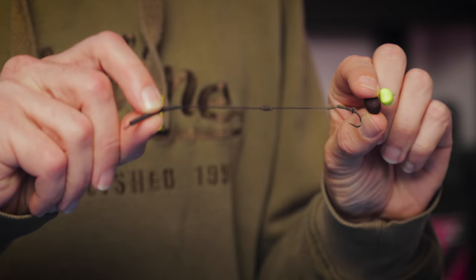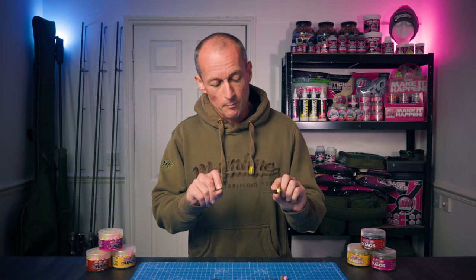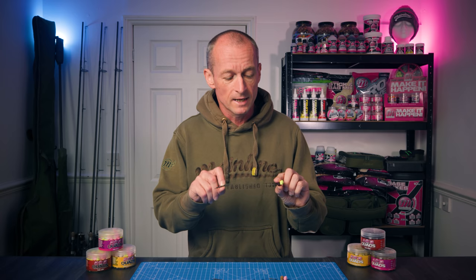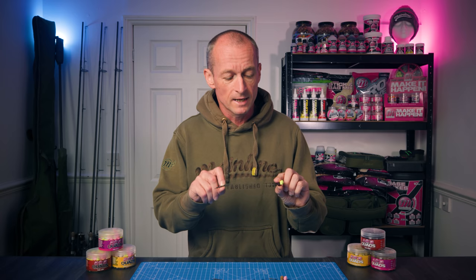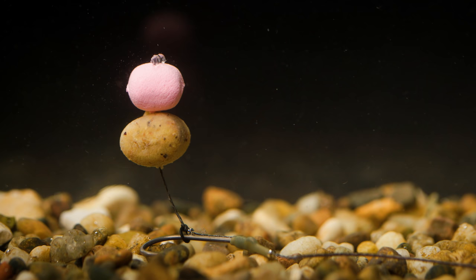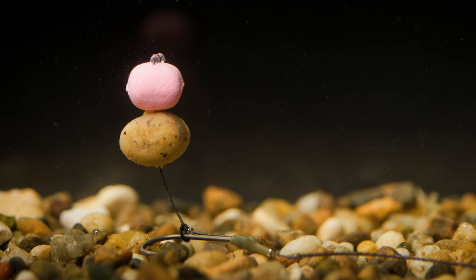If you'd like to know how to tie this rig, we've already done a video showing you how to tie this long shank snowman rig, and I'll leave a link to that video in the description box below. As you can see, it's the perfect way to combine both a bottom bait and a nice bright visual topper.